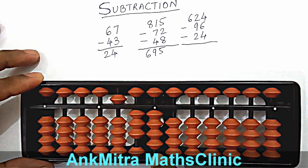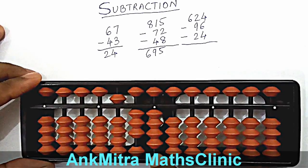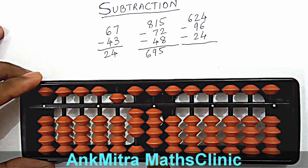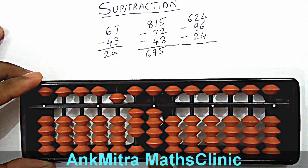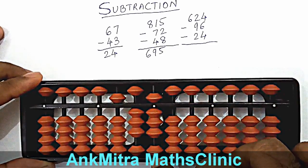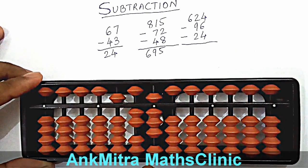Now coming to the units place, we are supposed to subtract 6. Again on this rod, we don't have 6 beads available. So we'll use the big friend of 6. Big friend of 6 is 4. So we'll add 4 and subtract 10 to finish the subtraction of 6. To add 4, we don't have 4 beads available for addition, so we'll do the small friend addition of 4, which is done using plus 5 minus 1. This completes the plus 4 part. Along with that, we'll do minus 10, which will finish the minus 96 subtraction completely.